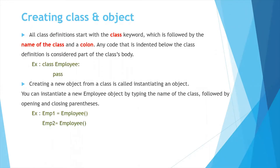Now let's see how to create a class and object. A class can be defined using the 'class' keyword followed by the name of the class and a colon. Any code indented below the class definition is considered as part of the class. In this example I have created an Employee class. A new object can be created by typing the name of the class followed by opening and closing parentheses. Here I have created two objects, employee_one and employee_two, which are different and have unique address locations.